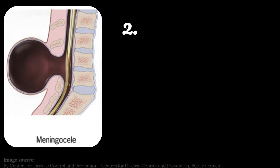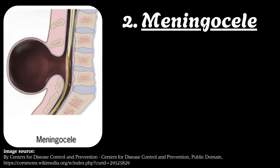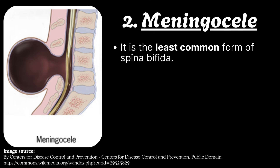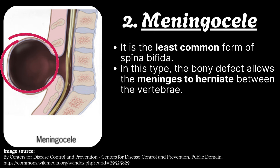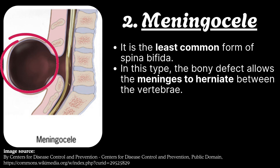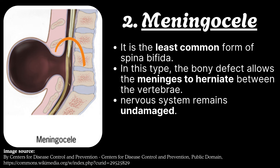Number 2: Meningocele. It is the least common form of spina bifida. In this type, the bony defect allows the meninges to herniate between the vertebrae. In this type, the nervous system remains undamaged.